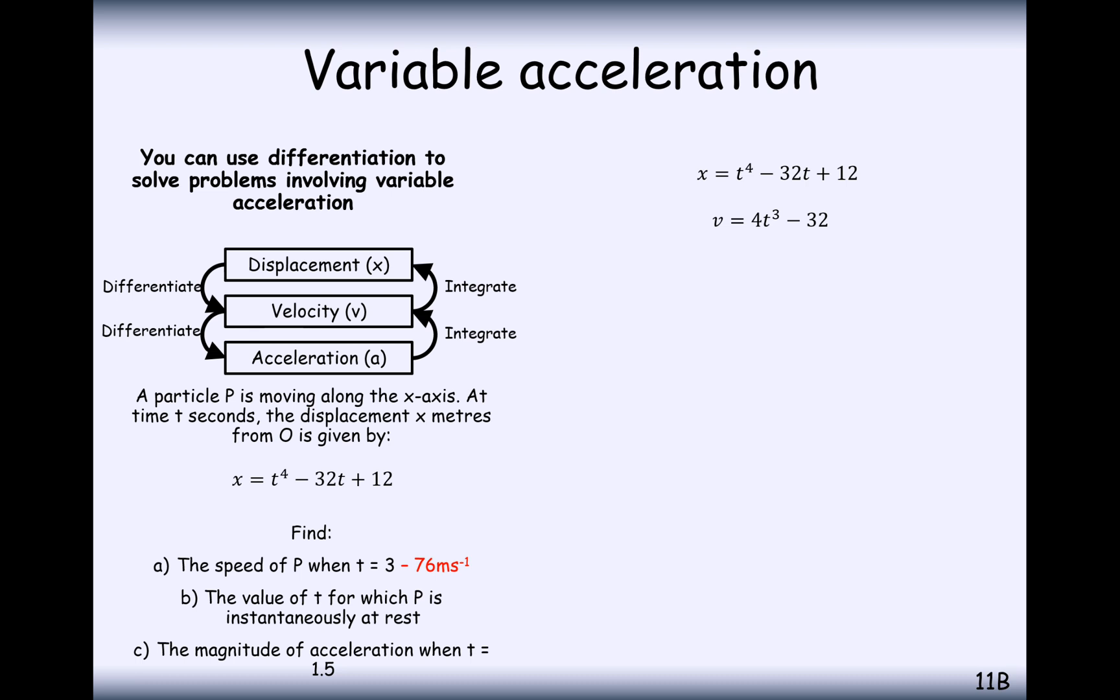For part b here, the value of t for which it's instantaneously at rest, well if you're looking for this particle to be at rest, you're looking for its velocity to equal 0. So we set the velocity equal to 0 and solve to work out what t needs to be. t needs to either be 2. So when t equals 2 it's instantaneously at rest.